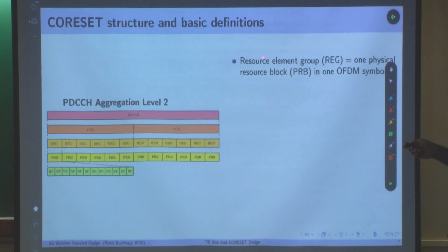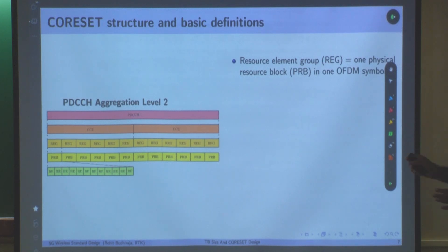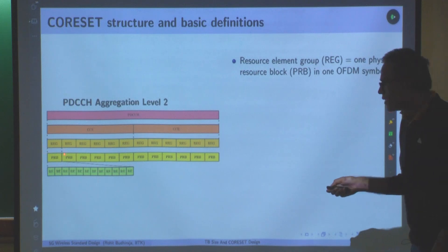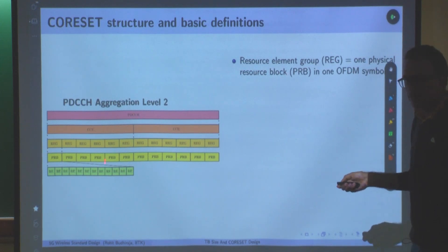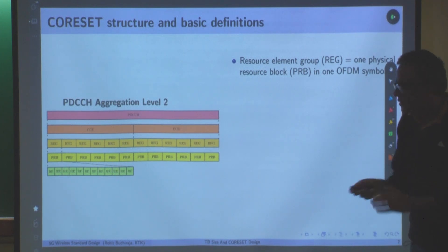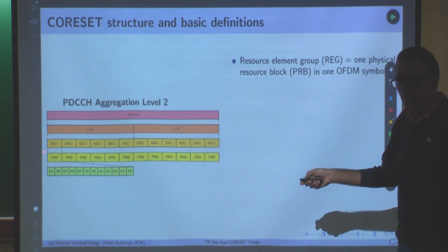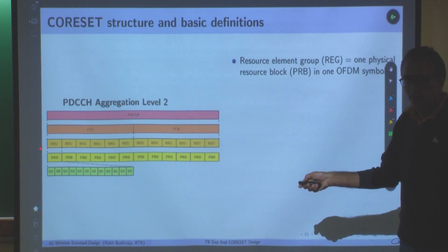Let us look at the CORESET structure and basic definitions. The first basic unit is the Resource Element Group, or REG. A REG is essentially one PRB in one OFDM symbol. One PRB has 12 resource elements, so one REG also contains 12 REs. In the PDCCH domain, we call this a REG — resource element group.